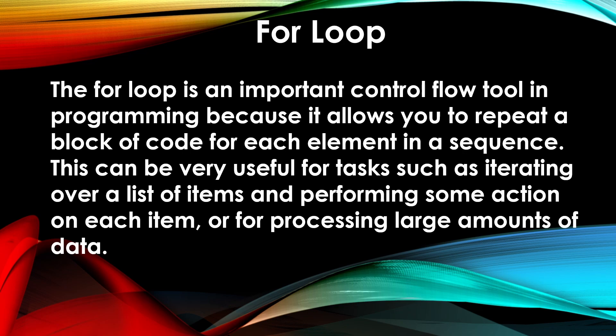A for loop is an important control flow tool in programming because it allows you to repeat a block of code for each element in a sequence. This can be very useful for tasks such as iterating over a list of items and performing some action on each item, or for processing large amounts of data. For example, suppose you work at a company that stores customer data in a large database and you need to process this data to generate a report for management — you could use a for loop to iterate over each customer record.